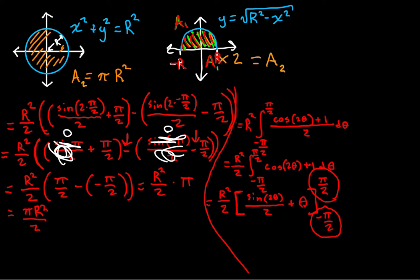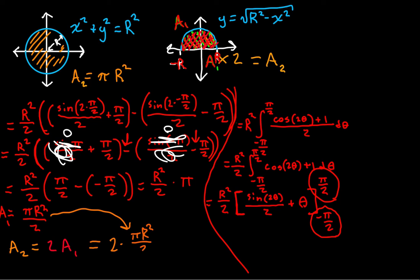Wait — we're actually looking for that orange area. We know that area 2, the entire area of the circle, is going to be 2 times area 1 — the red area was just the area of a semicircle. So if we double it, we'll find the area of the complete circle. For all that hard work, we have 2 times pi r squared over 2, which is just going to be pi r squared.